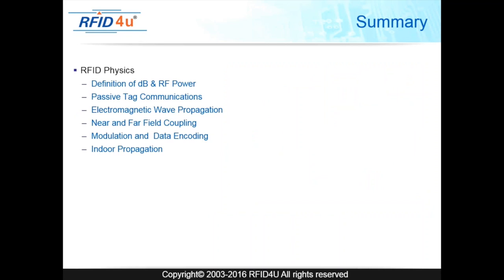In summary, this module covered the definition of a decibel and watt in RF power, passive tag communication, EM wave propagation, near and far field coupling, modulation and data encoding, and indoor propagation. That's the end of this segment. Thank you.